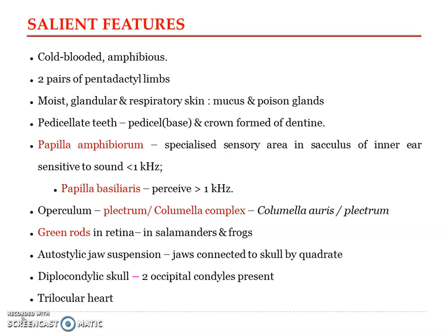The next salient feature is pedicillate teeth. Almost all present-day amphibians have teeth, and in most of them the teeth are pedicillate. In pedicillate teeth, the base — called the pedicel — and the crown are formed of dentine and are separated from each other by a narrow zone of fibrous connective tissue. Pedicillate teeth are absent in some salamanders and certain frogs. Although some Actinopterygian fishes also possess pedicillate teeth, they are in no way related to amphibians.